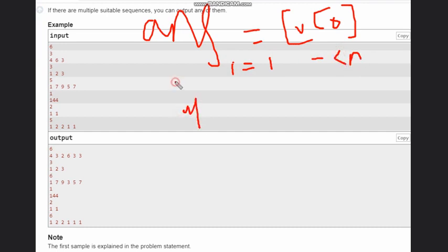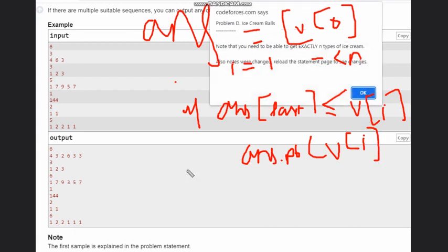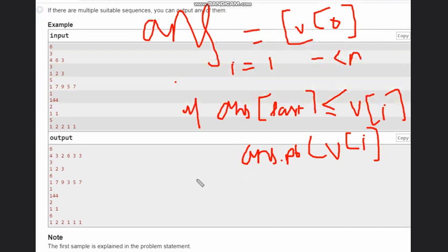Then simply check if this answer of last index n minus 1, basically last element, is less than equal to B of i. If this is the case, we will push B of i simply. Else, what we have to do? We have to push element twice, same element twice.